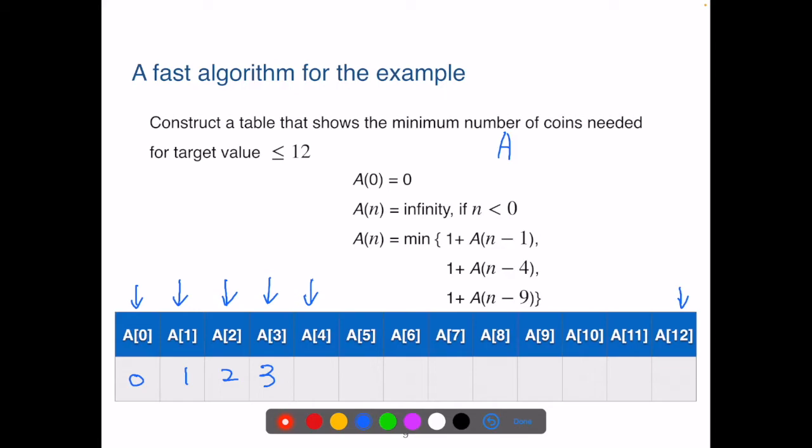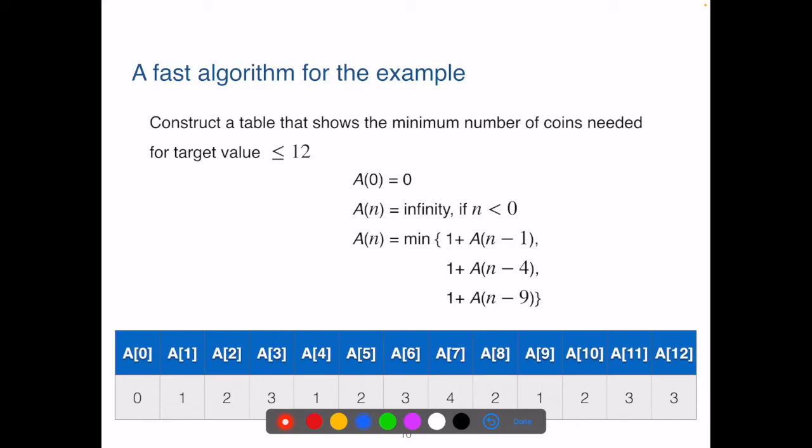Now let's look at A(4). So for A(4), the options are A(3), A(0), and A(-5). We can ignore this one. And we look at A(3) and A(0), which one is smaller. So A(0) is smaller. So we know A(4) will be A(0) plus 1, so that'll be 1. And so on. Please pause the video and figure out the rest of the table on your own. Here we have the table filled and we see A(12) is 3. So this is the solution to the original problem. When the target value is 12, we need only as few as 3 coins to make the change.